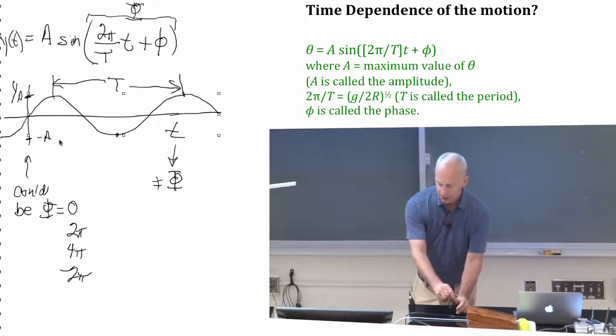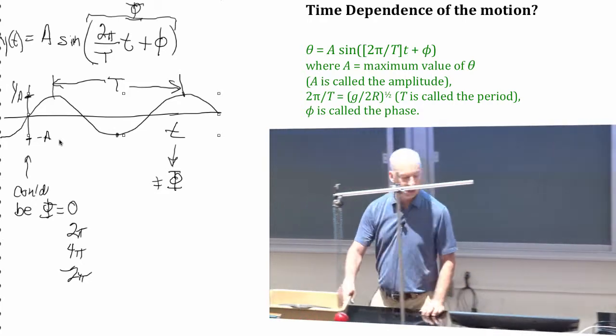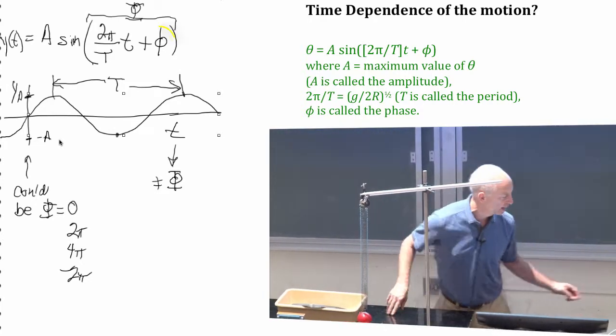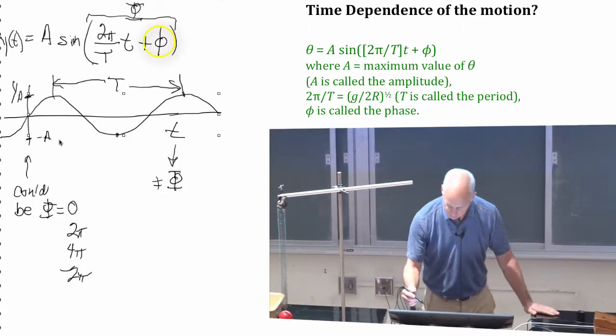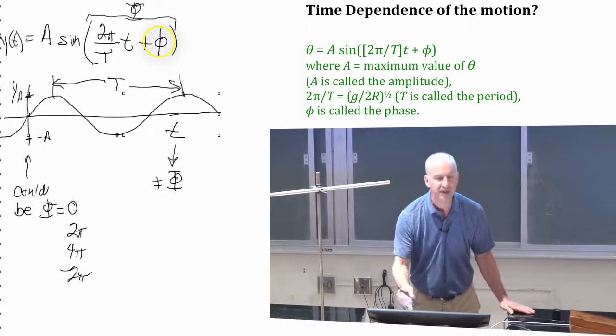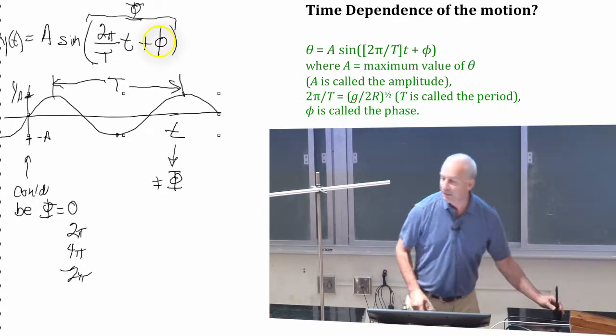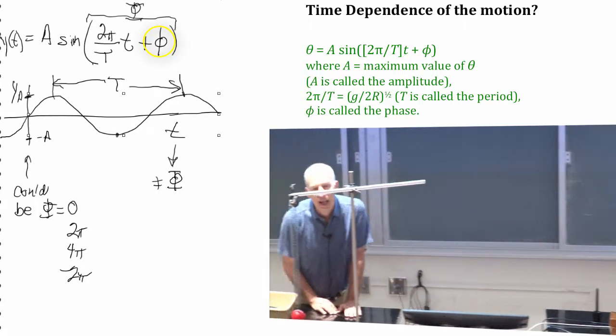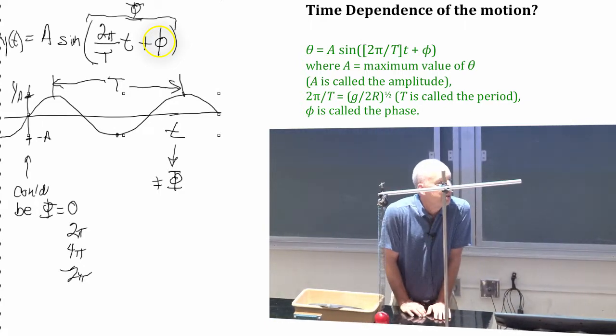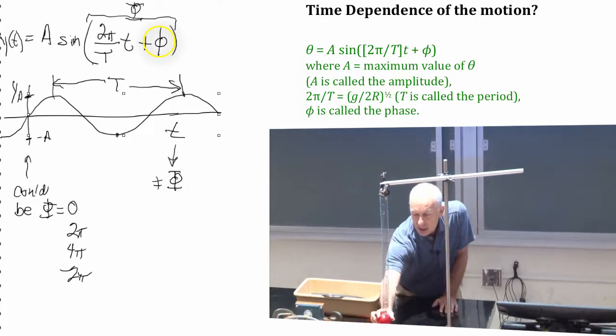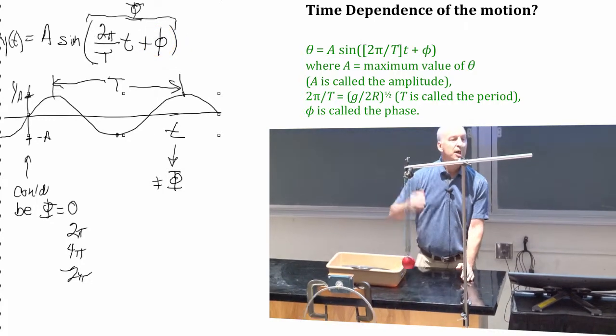So, what that does, basically, what this little phase angle phi does, phi is called the phase. What the phase does, is it takes care, basically, it takes care of t equals zero. This thing is oscillating. What do I want to call t equals zero?